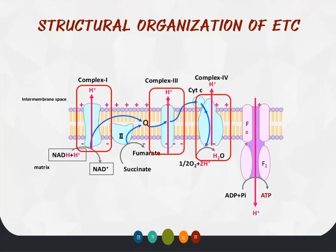Looking at this diagram: the electron transport chain consists of five enzyme complexes and two coenzymes. We have Complex I, II, III, IV, and Complex V — also known as ATP synthetase. The two coenzymes are coenzyme Q and cytochrome c. Both coenzyme Q and cytochrome c are also known as mobile electron carriers, because they can move around the electron transport chain unlike the other complexes which are in fixed positions.